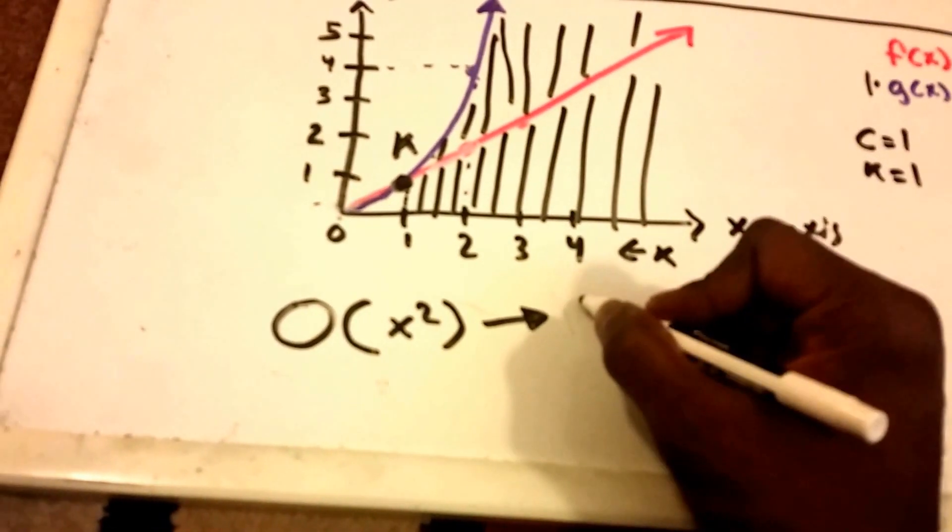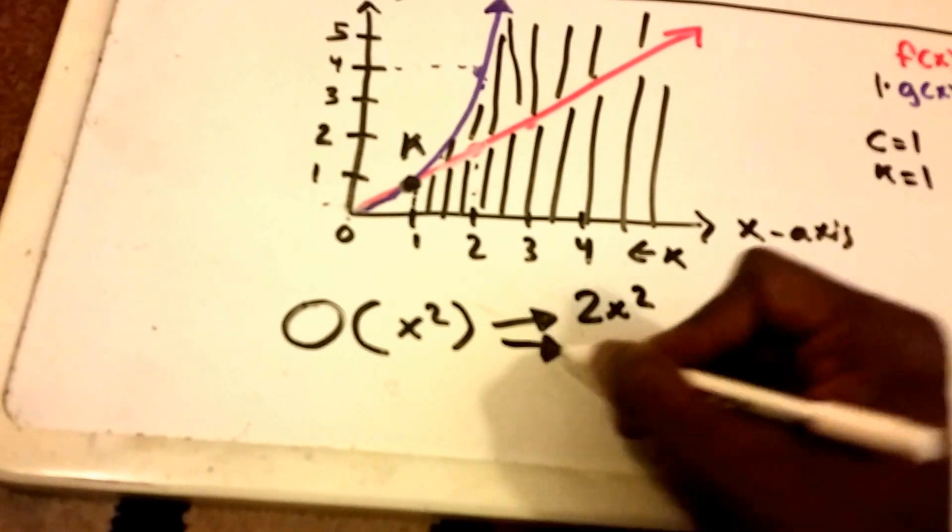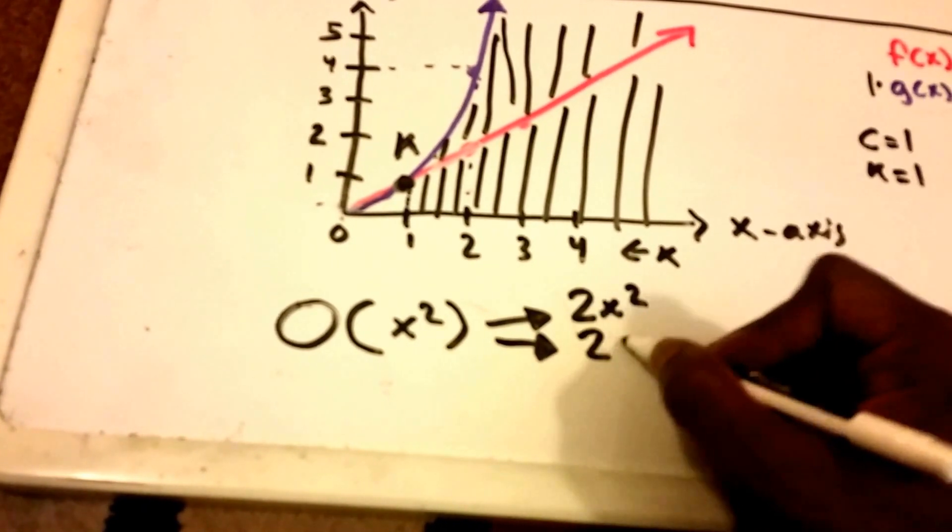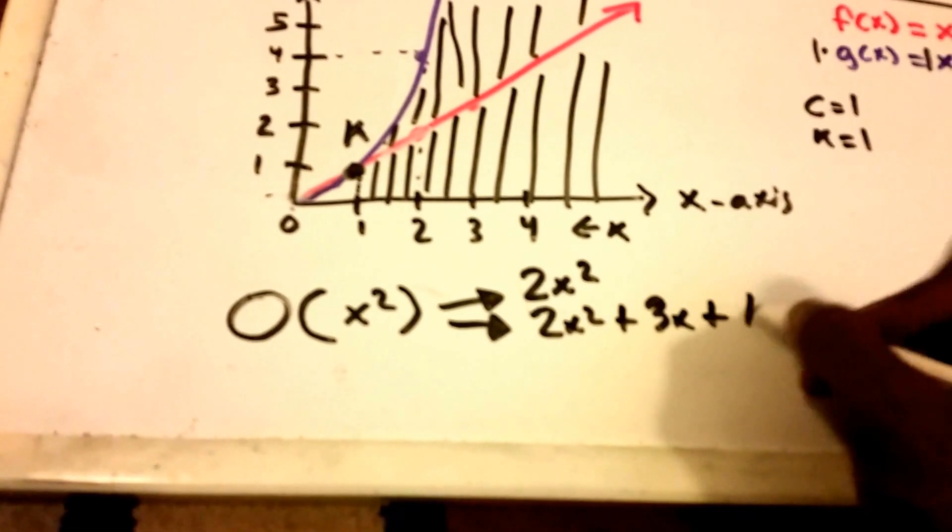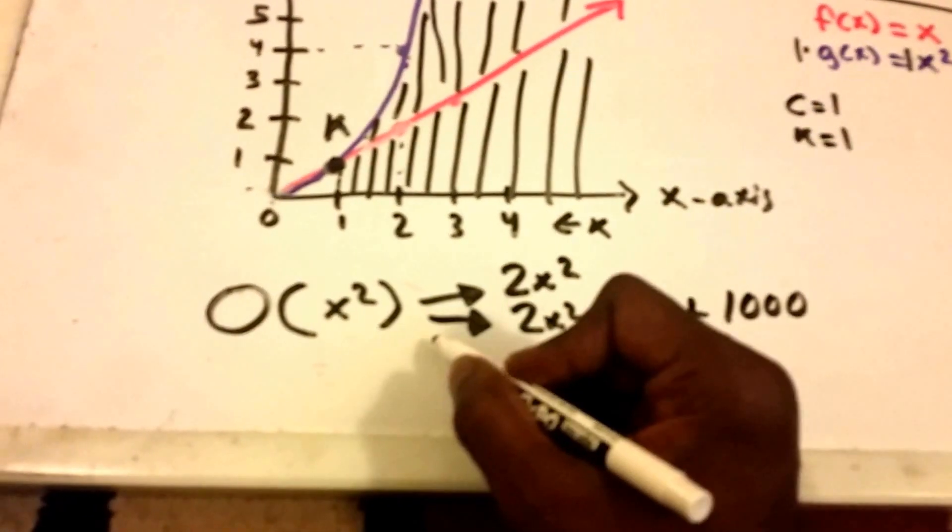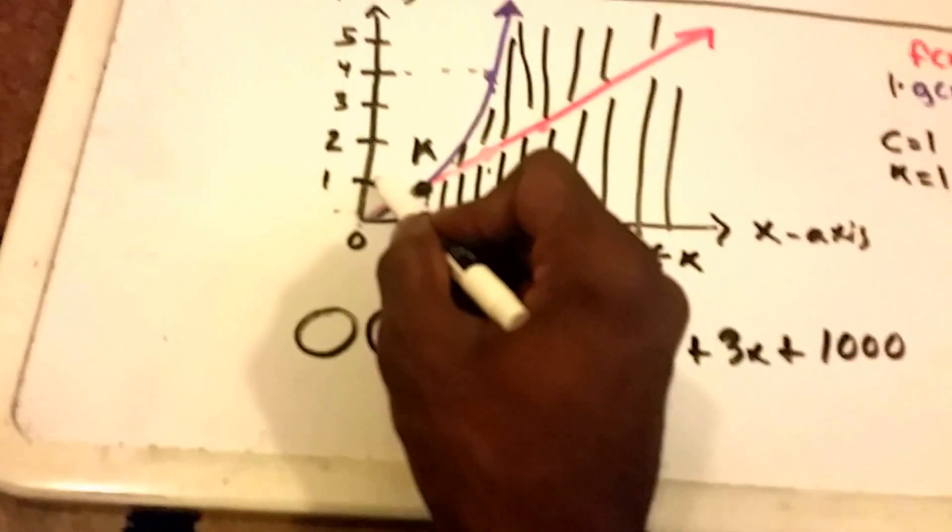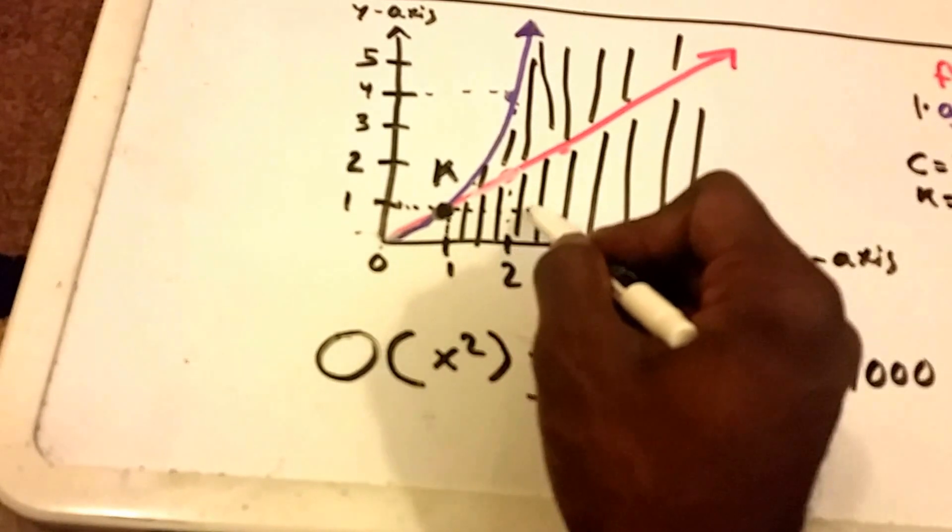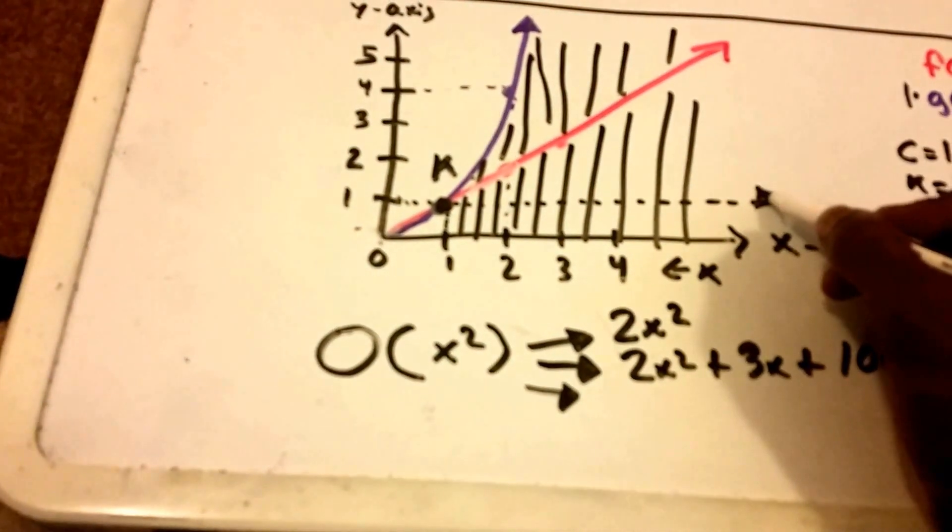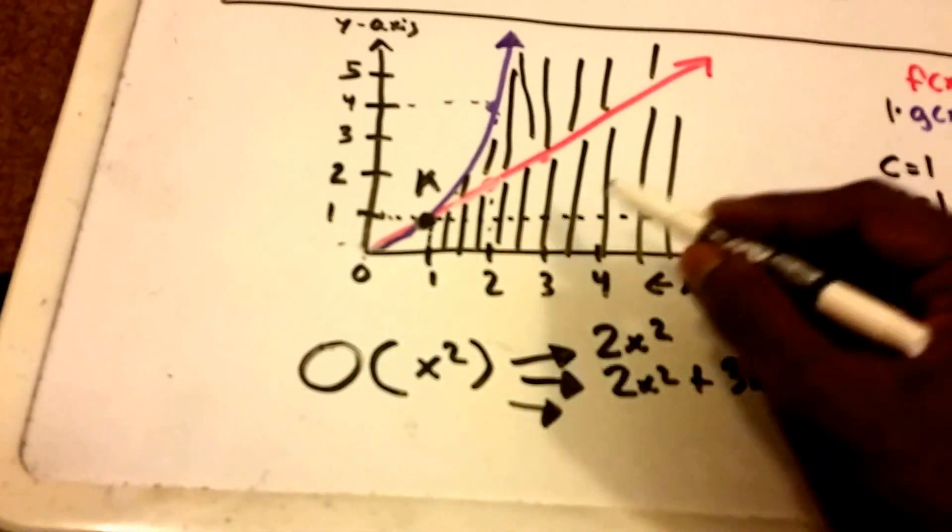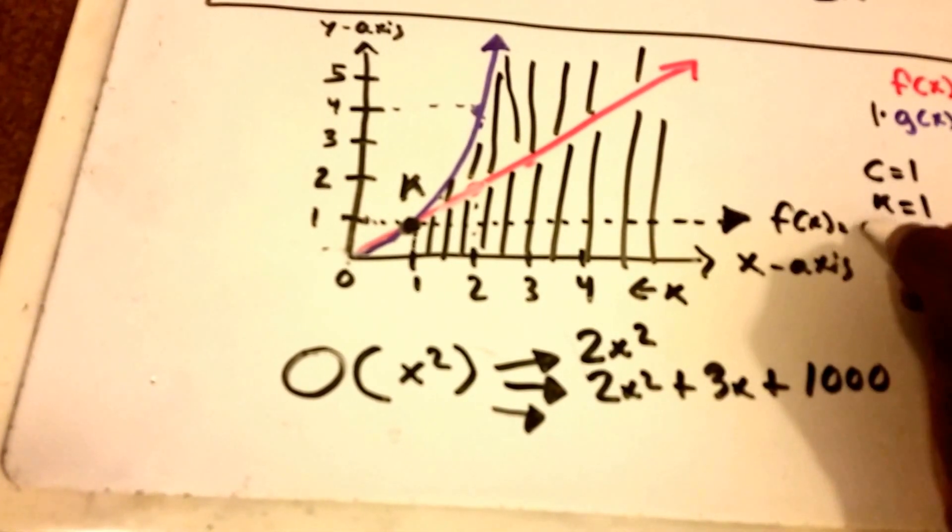So this can be 2X squared, it can be 2X squared plus 3X plus 1000, it can even be a constant. So we could have a constant up here in a graph that runs like this, so this would just be some constant value where f of X equals one.